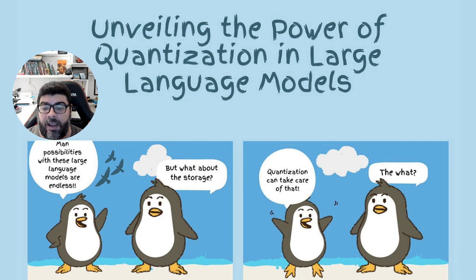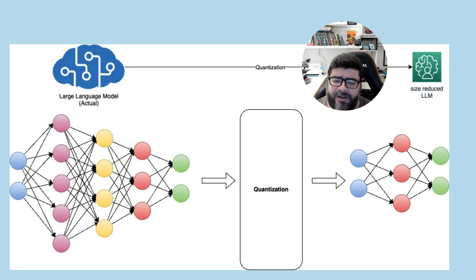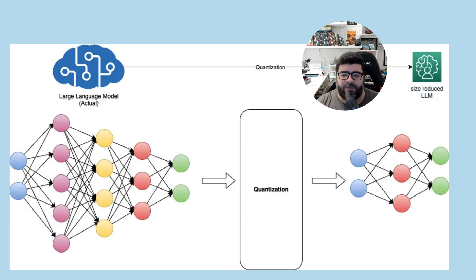A good solution for this problem is to use quantization in large language models. We need to understand what quantization is. Quantization does not reduce the number of layers, but reduces the interval of numeric values. For example, you have float values in the nodes and you can change those float values to integer values, reducing the domain of the numbers in the nodes.